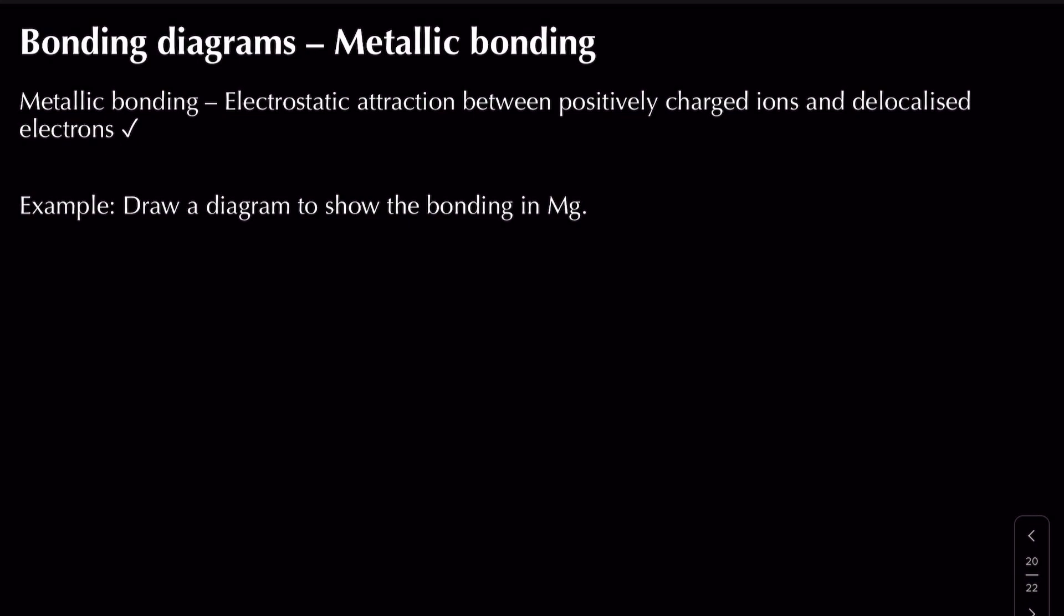In this video we're going to be looking at metallic bonding and how we can actually draw a diagram to show the bonding in metals. Metallic bonding is the electrostatic attraction between positively charged ions and delocalised electrons. In this example we're asked to show the bonding in magnesium.